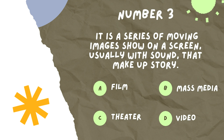Number three: It is a series of moving images shown on a screen, usually with sound, that makes up a story. A, film. B, mass media. C, theater. D, video. The answer is A, film.